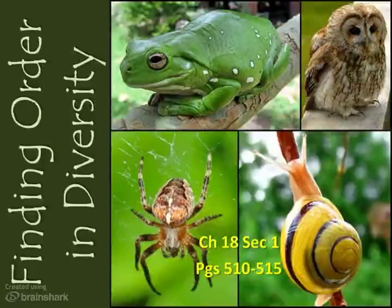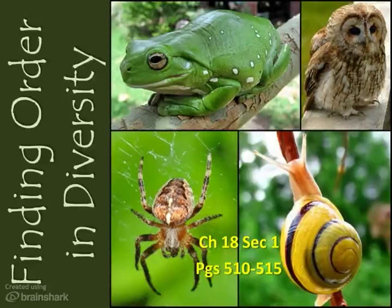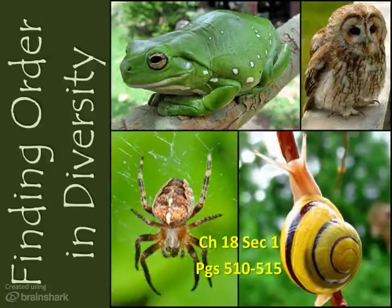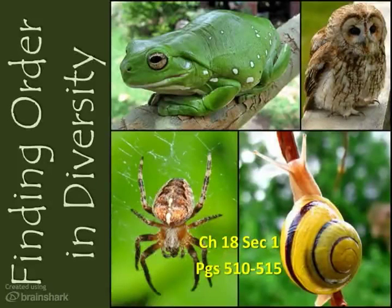Welcome back to the first unit in second semester. We're going to be looking at classification of animals in this first unit and then we'll be moving into the animal and plant kingdom during the rest of the semester. For more than three and a half billion years, life on earth has been constantly changing. Processes like natural selection have led to a staggering diversity of organisms. Biologists have identified and named about one and a half million different species so far.